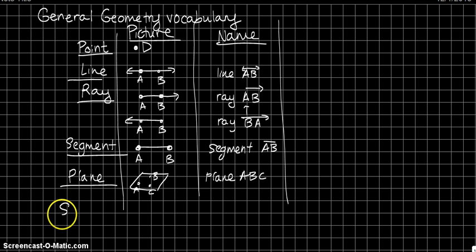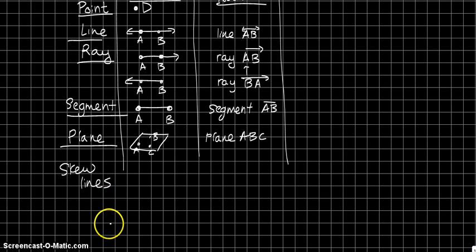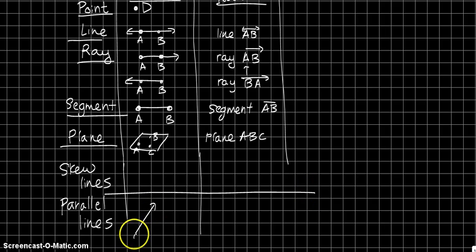Last piece of vocabulary you need to remember are skew lines. Let's just review really quick. I know you already know what parallel lines are, which is why I didn't say it already. Parallel lines are two lines that are in the same plane that never touch.